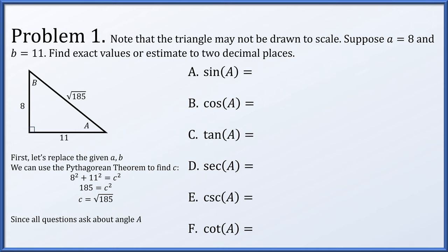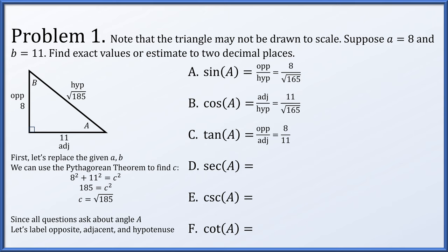All questions ask about angle A. So let's just label what side is opposite, adjacent, and hypotenuse regarding angle A. So 8 is opposite of A, 11 is adjacent, and the square root of 185 is the hypotenuse. Now the sine of A is opposite over hypotenuse, or 8 over root 185. The cosine is adjacent over hypotenuse, 11 over root 185. Tangent is opposite over adjacent, or 8 over 11.